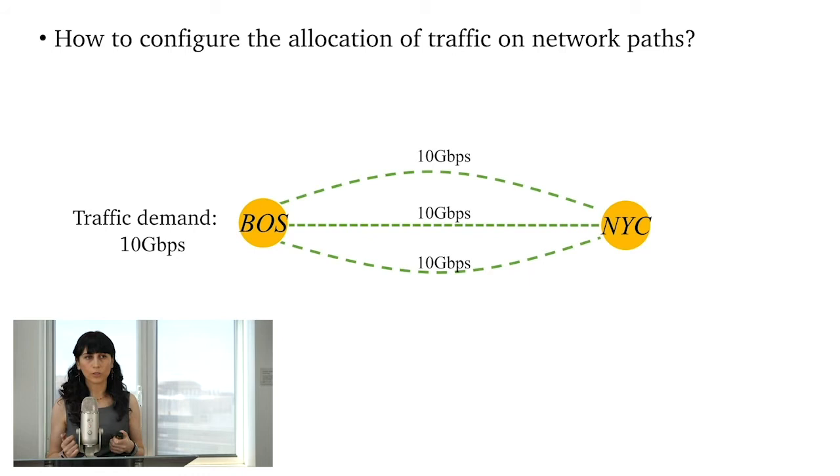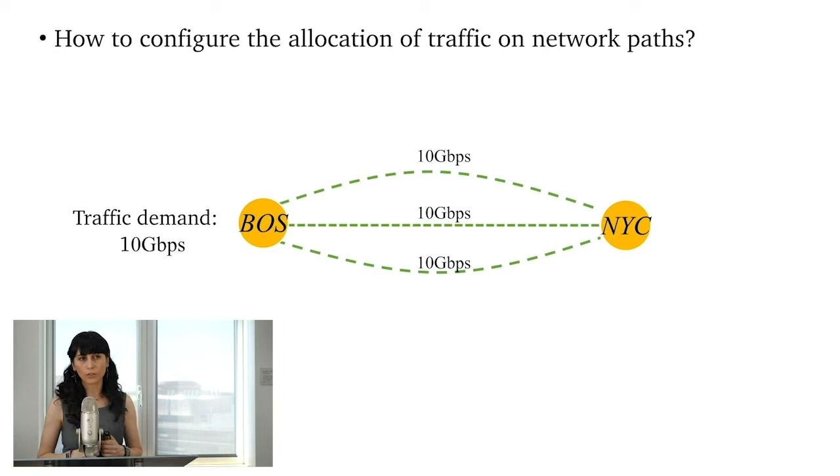And in particular, we're going to focus on the internet-scale backbone networks. So let's say that we have two cities, Boston and New York, and there are three links connecting these two cities together. The capacity of each of these links is 10 gigabits per second. And let's say that we have a 10 gigabits per second traffic demand. And so the goal is to maximize this performance, and hence we're going to carry equal amount of traffic across these three links. And so the idea would be that we're going to carry, because we only have 10 gigabits per second demand, we're going to carry 10 over 3, 10 over 3, 10 over 3 across these three links.